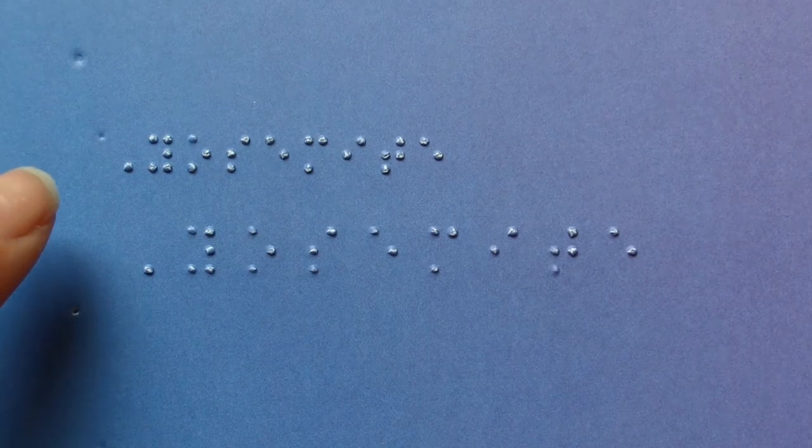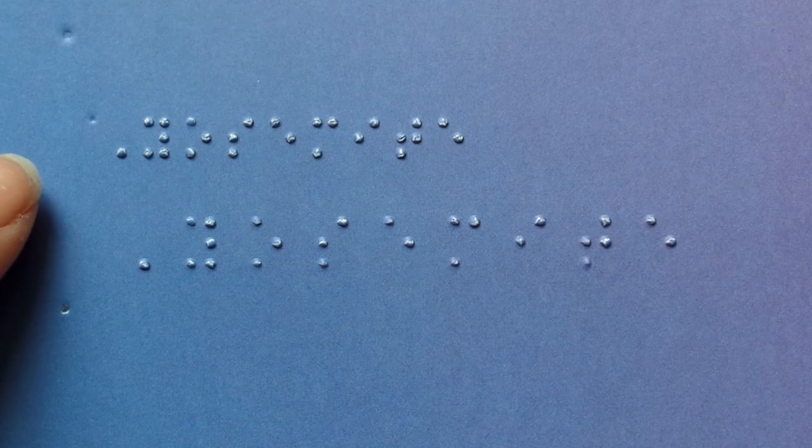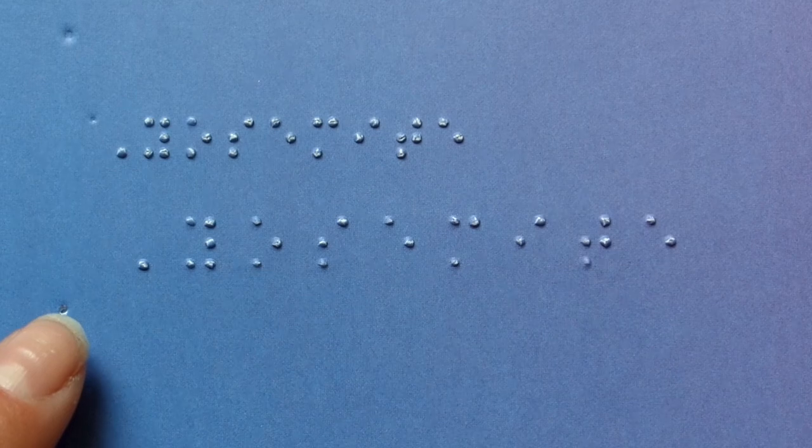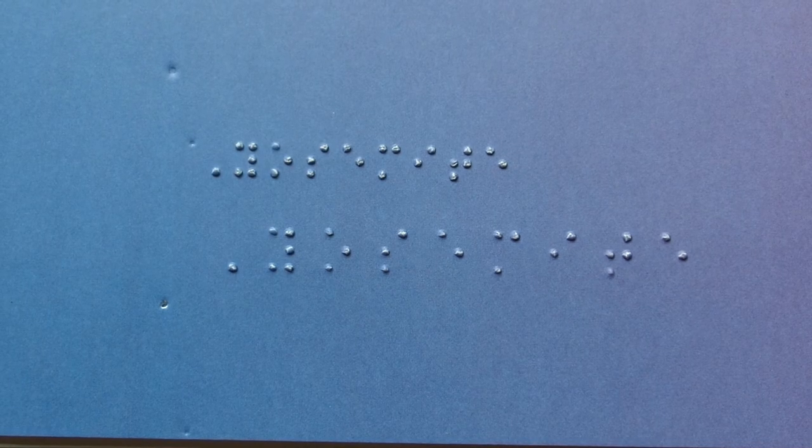So there you have it on the top row. In braille, it says Yosemite, and below it, in jumbo braille, it says Yosemite. And the jumbo braille is about three cells longer because there's more space in between each cell. The dots are a little bigger, and there's just a little more space in between the dots.